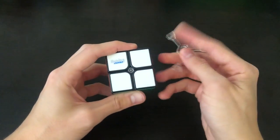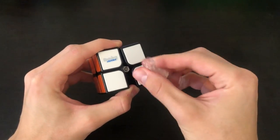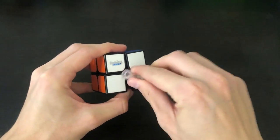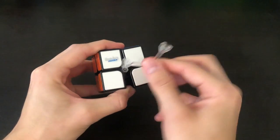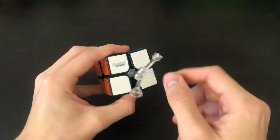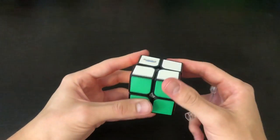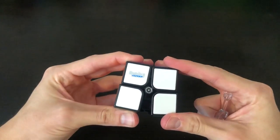So here I have the tensioning tool from the GAN 354. And let's see if any of these work on this. It's a smaller nut. That seems too small. Okay, right here. So this one right here is the one that fits on this.